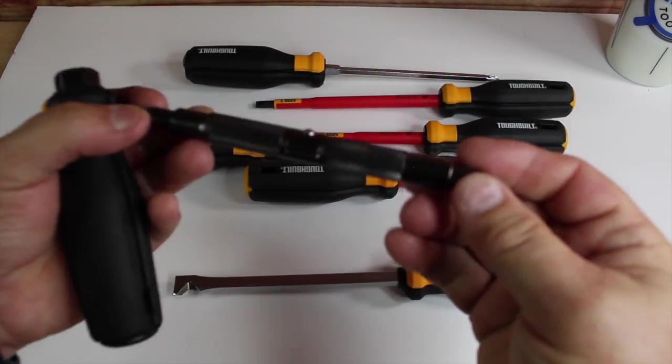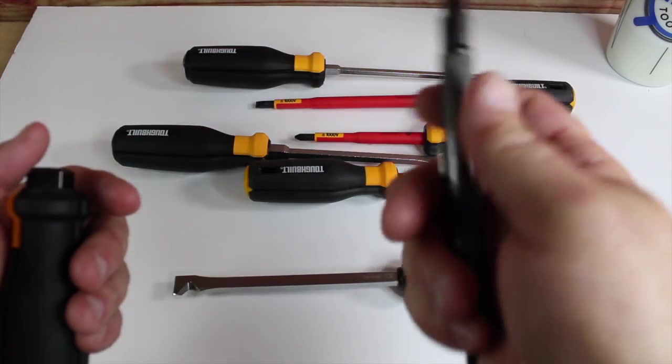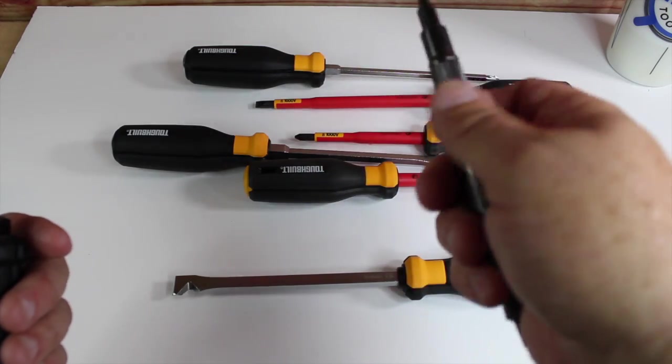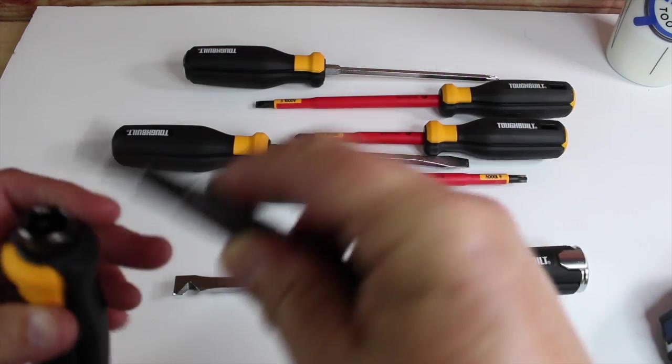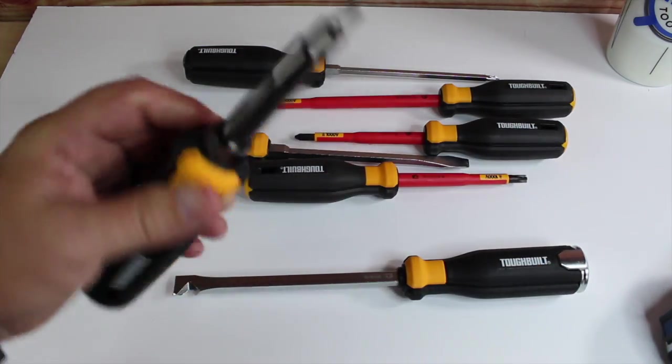They've got the ToughBuilt quality. Like I said, I really like the knurling. I mean, you could literally take this and leave this out and just—if you're doing some smaller work where you want to roll it in your hand—you could actually just leave it out of there. But they're really, really nice screwdrivers. I've been using this a ton on my maintenance job.